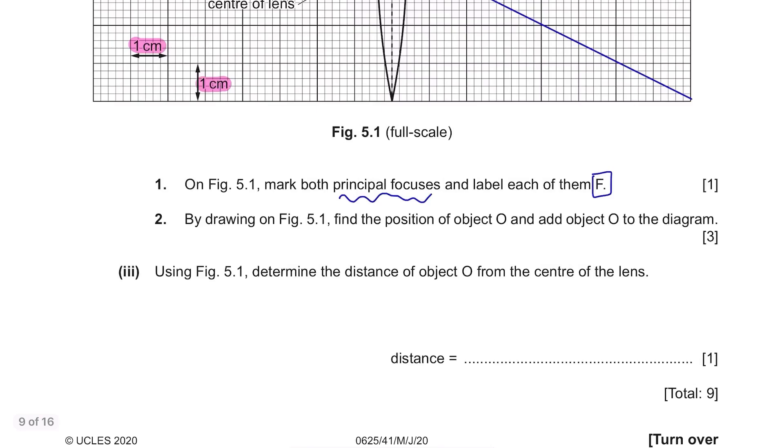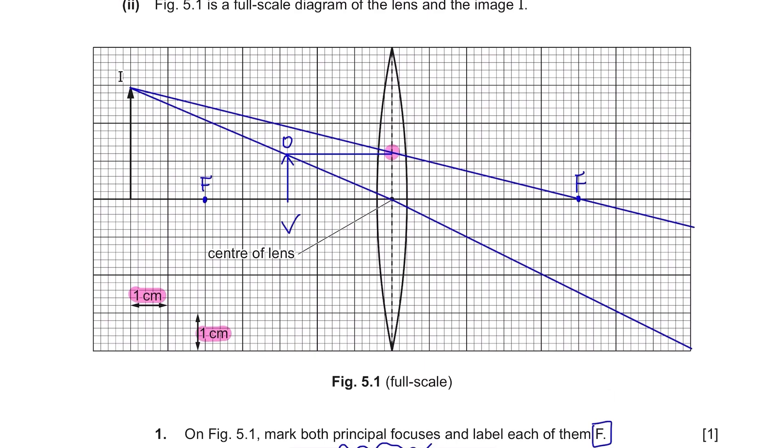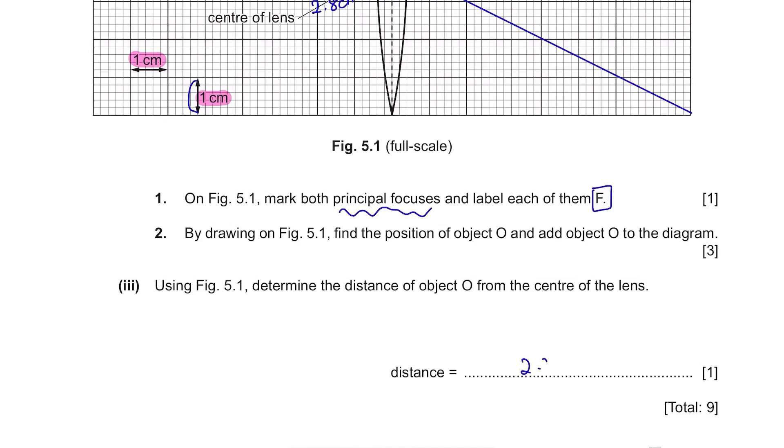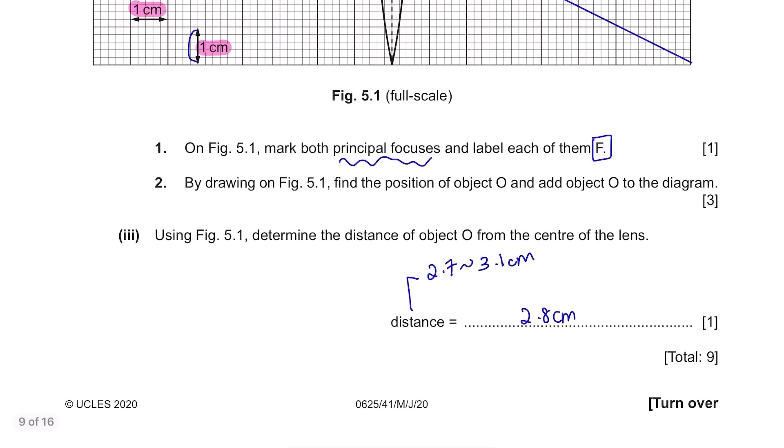Using figure 5.1, determine the distance of object O from the centre of the lens. This is where the object is and the 5 spaces are considered as 1 cm so it's around 2.8 cm for me. Any value between 2.7 and 3.1 is accepted for this question since everyone's graph might be slightly different but the range isn't that big so make sure your graph is accurate.